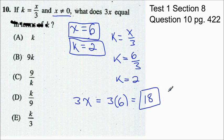Now all we need to do is figure out which one of our answer choices equals 18. So we go through we check answer a, k is 2, that's not 18. b equals 9 times 2 which is 18. So here's our answer b.